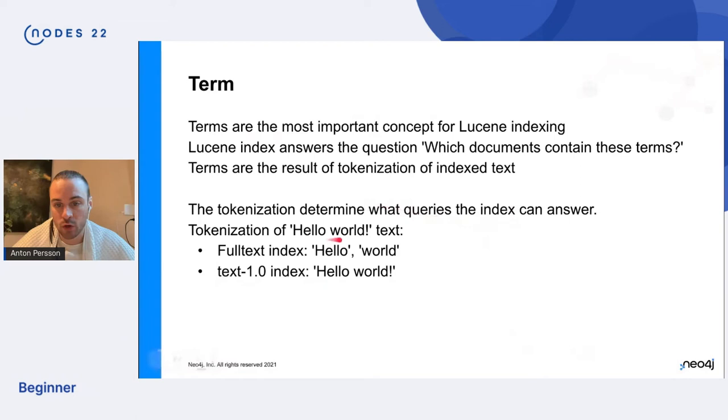So for example, if we have the hello world text, the string will be tokenized in some way and to illustrate that this can be done in different ways, we'll look at the full text index as an example. So the default analyzer for the full text index will tokenize hello world into hello and world. The whitespace is removed and the exclamation mark is also removed. But the text-1.0 with the four four one, it will just keep the entire string as it is. And note that like full text index and text-1 they fulfill completely different needs. So it's not like a comparison for those two types. It's more to illustrate that the tokenization process can look differently.